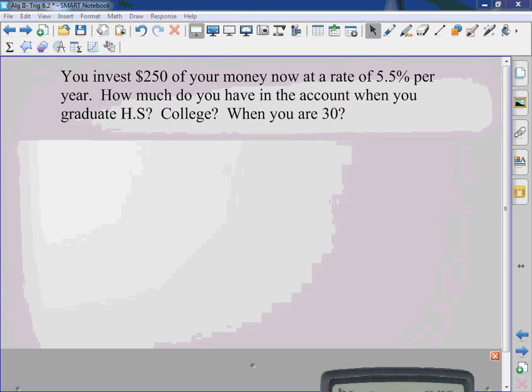You invest $250 of your money right now at a rate of 5.5% per year, which is really good percent. How much do you have when you graduate high school? How about when you graduate a four-year college or when you are 30 years old? How long is it pretty much for everyone in here to graduate high school? Well, for you, it's going to be two more years.